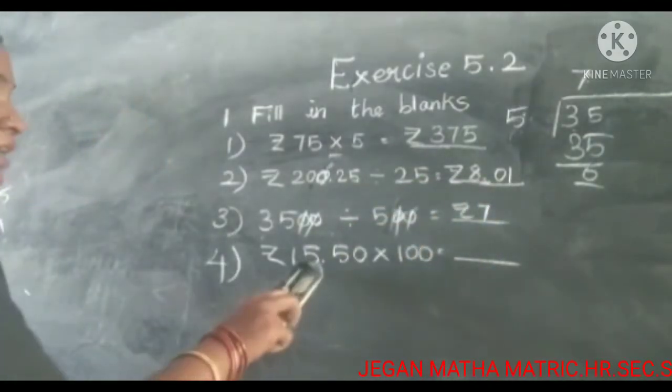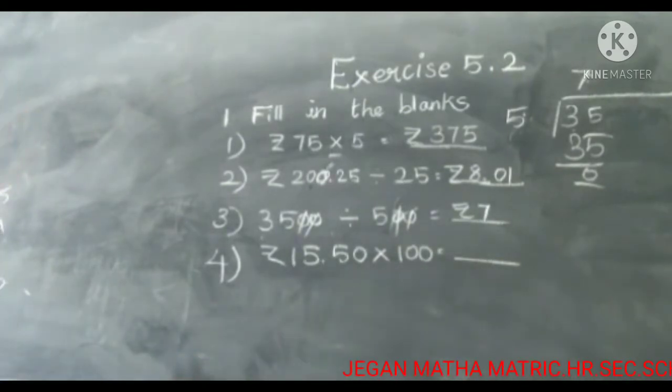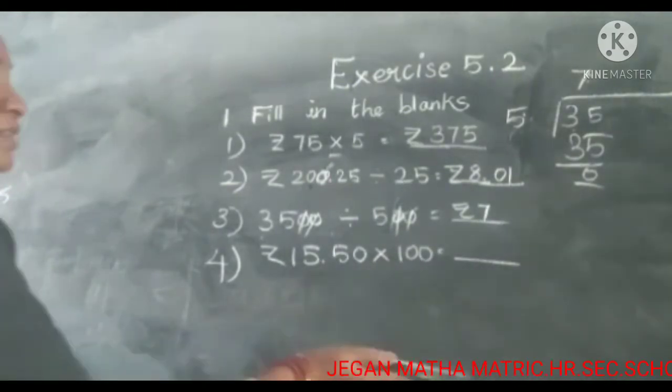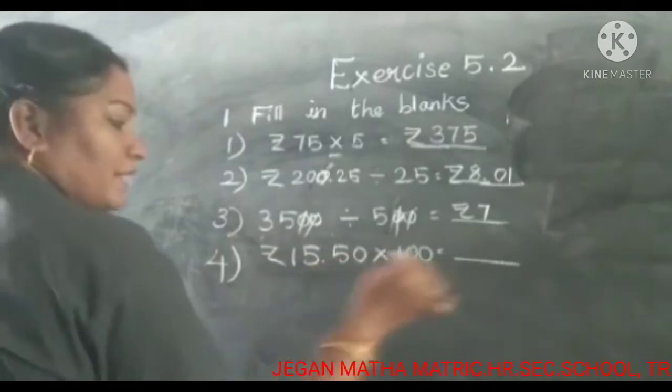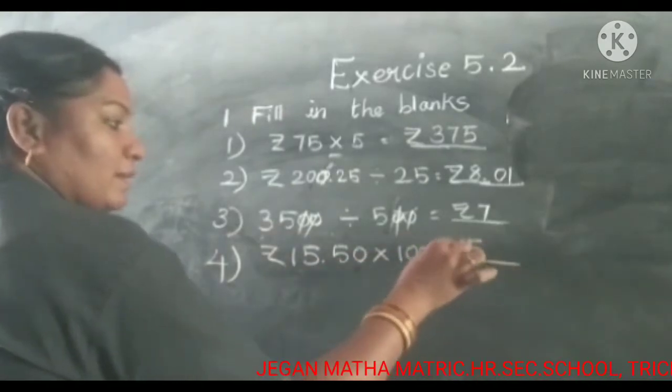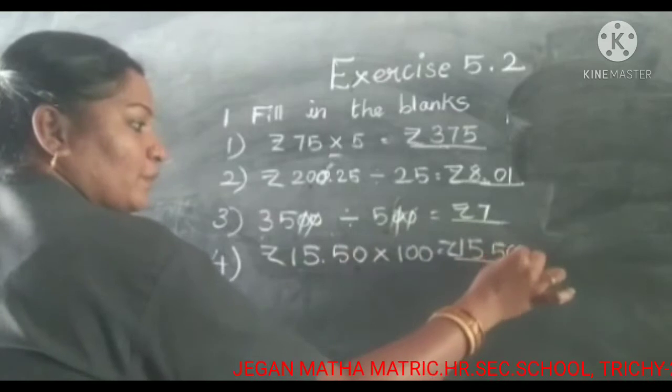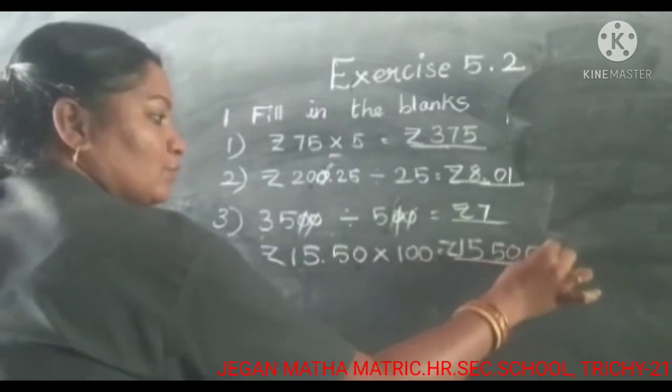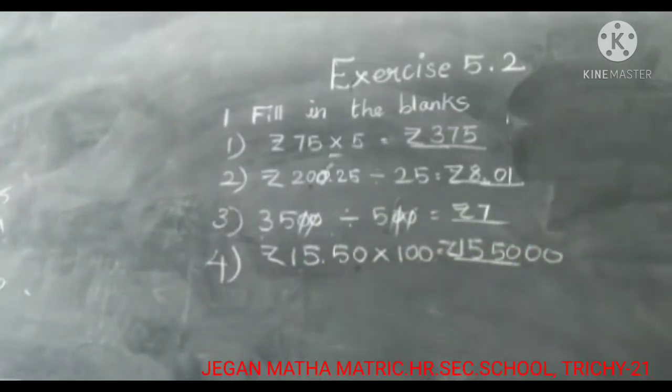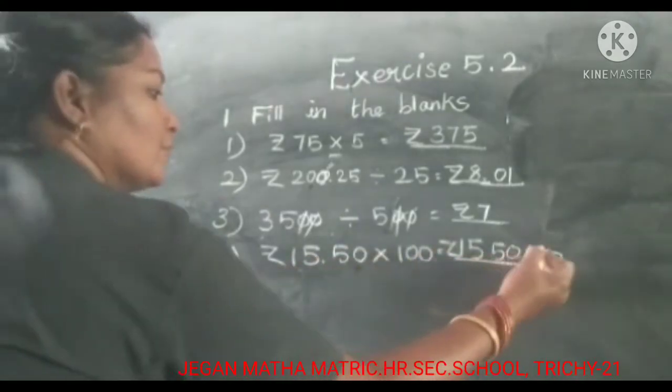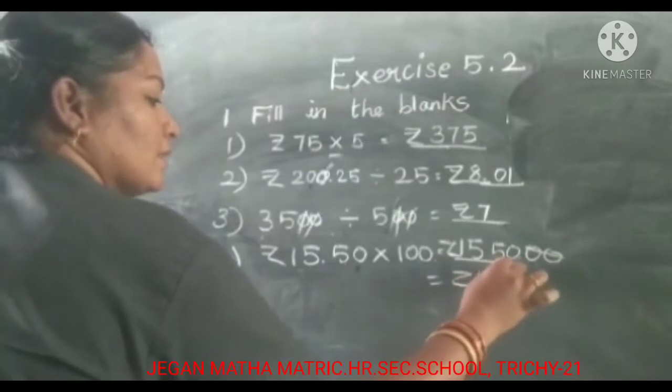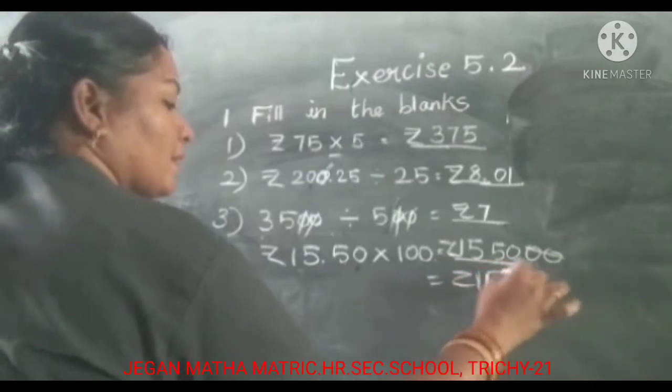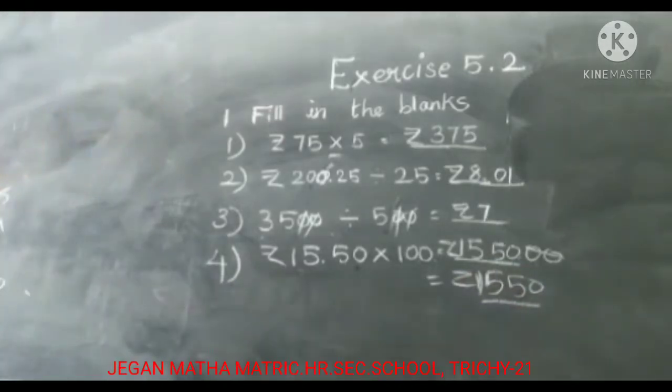Next one. 50 rupees and 55 paise multiplied with 100. Simple thing, add two zeros. Write the same number. Point of 2 zeros cross out. And answer is 1550.